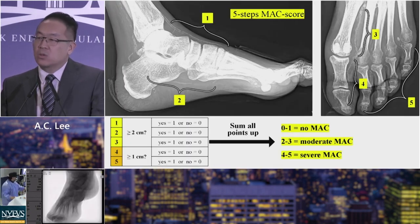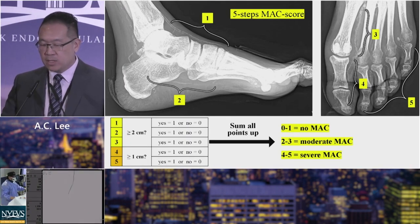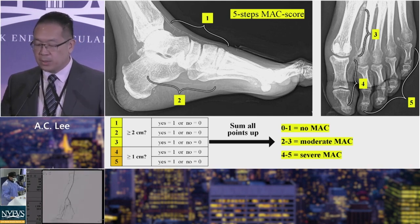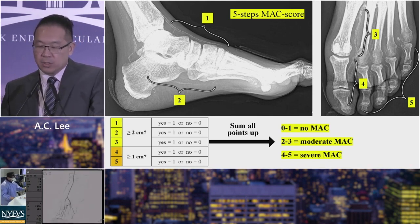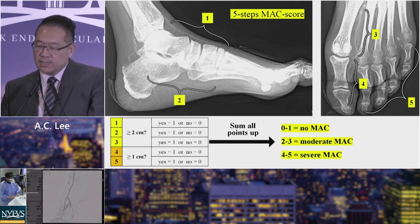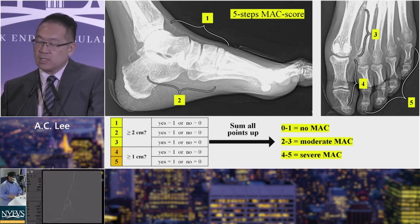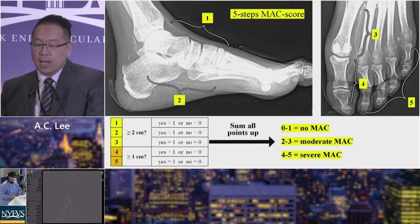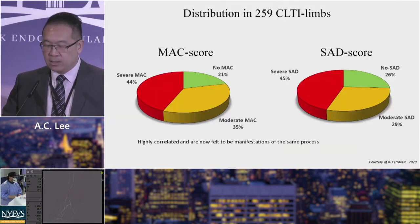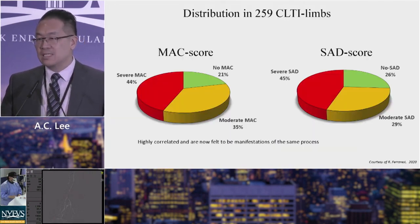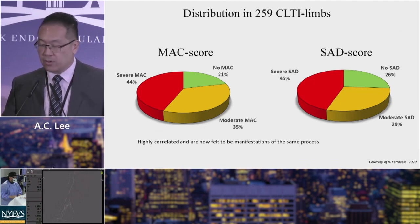There is also a pedal MAC score, which is a little easier to replicate — inter-observer reproduction is very reliable. You look at segments and determine whether there's more than two centimeters, or in some cases one centimeter, of calcium, add it up, and there are three categories: low MAC, moderate MAC, or severe MAC.